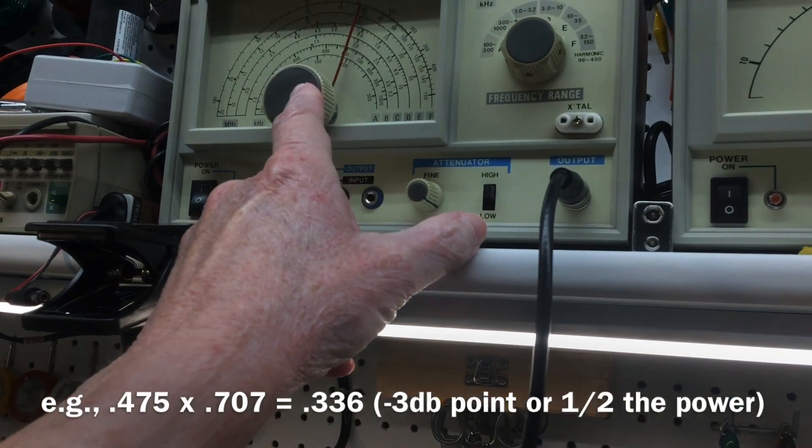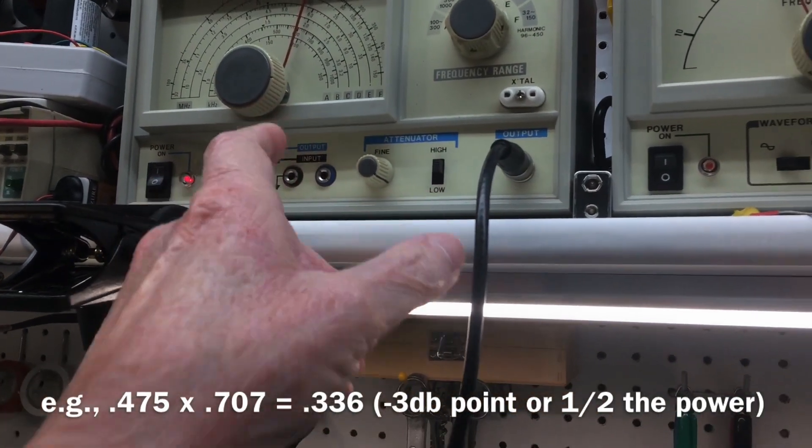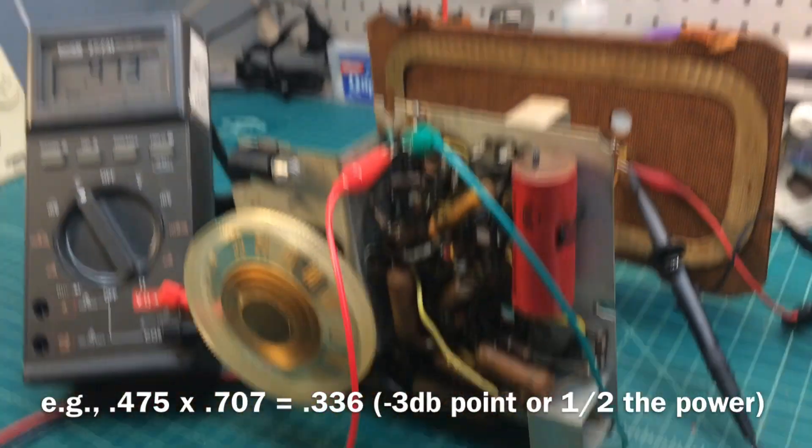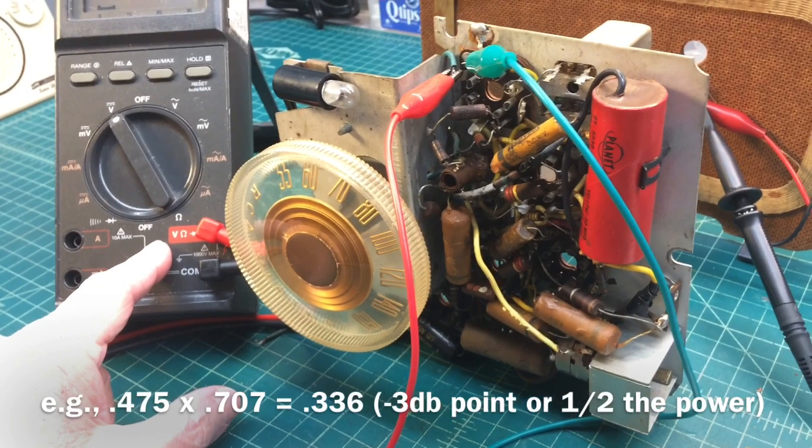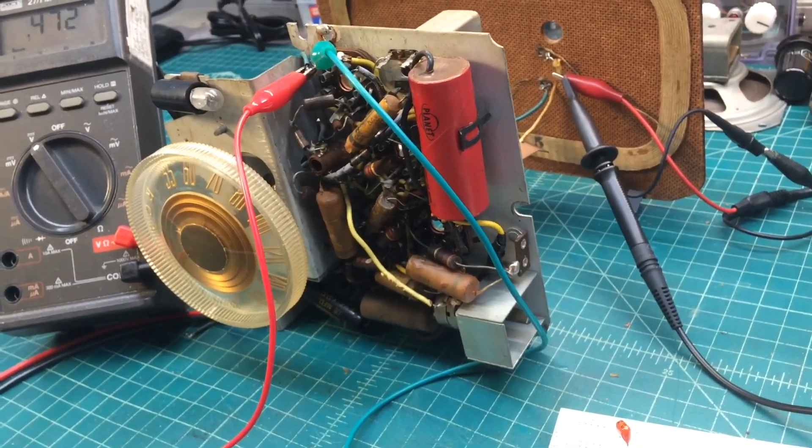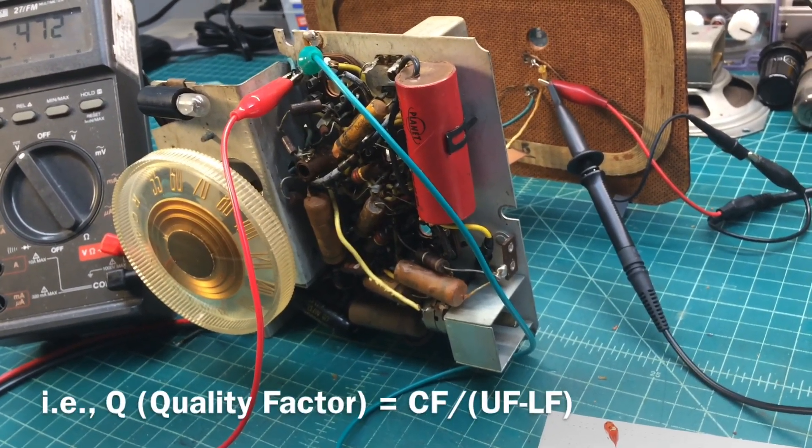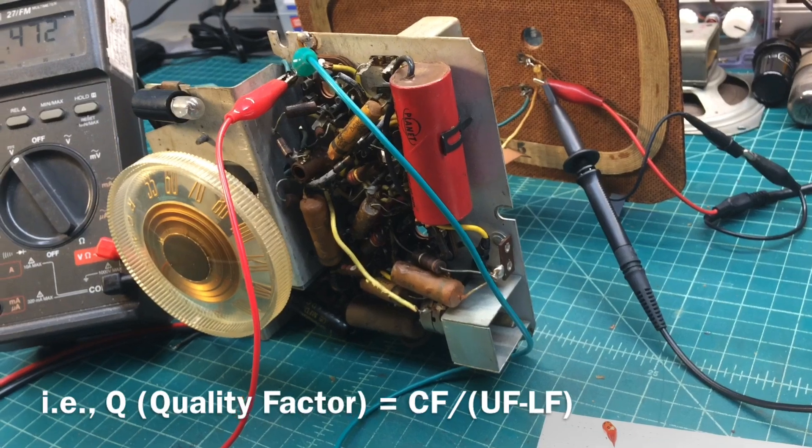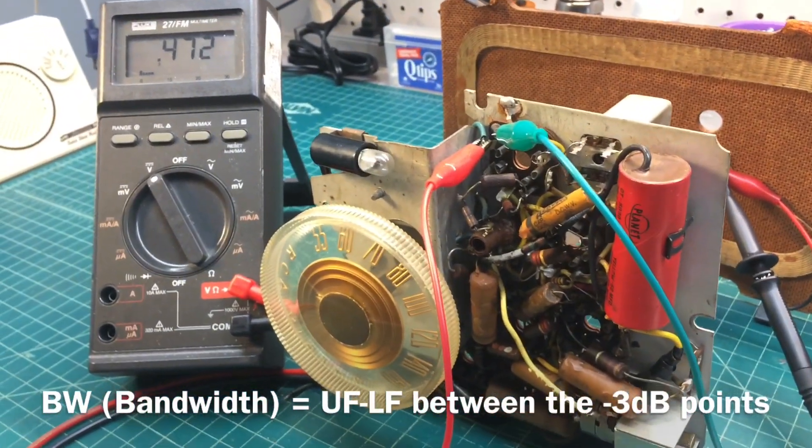So what I'm going to do is just rock the signal generator to the right, to the left, and take note of the 0.707 point of the max reading. Then I'll show you the formula here for just taking those three readings and calculating the Q, and at the same time we can calculate the bandwidth as well.